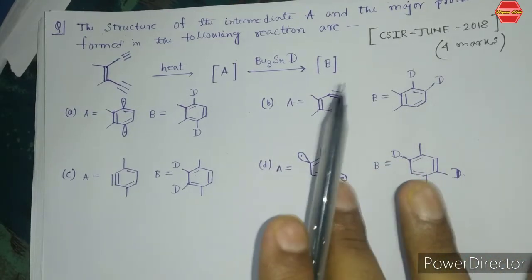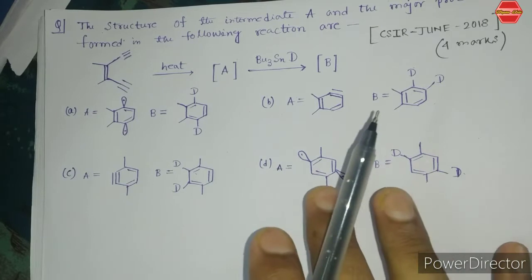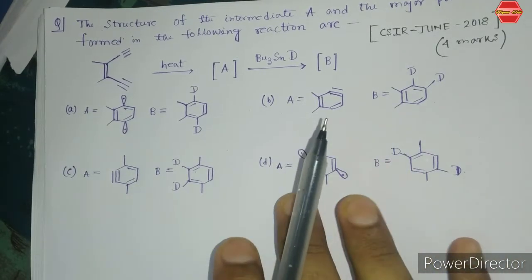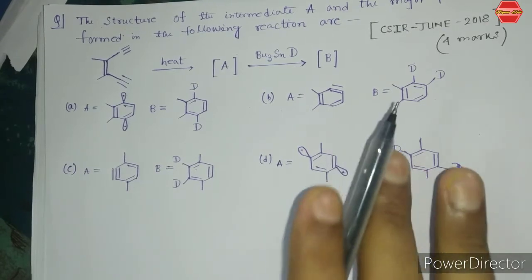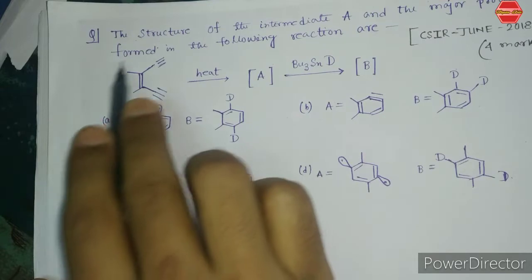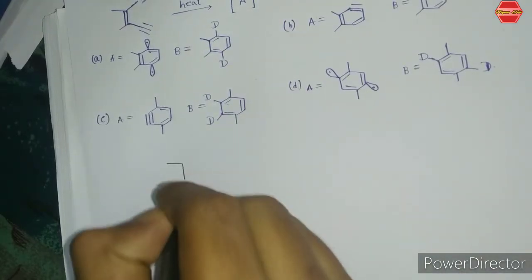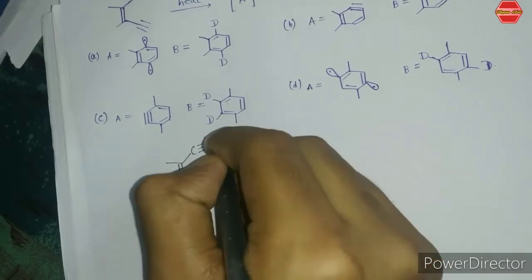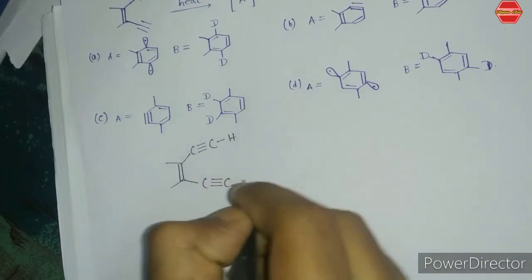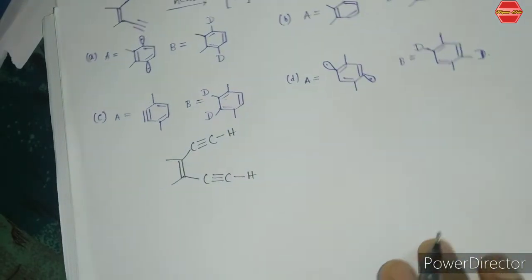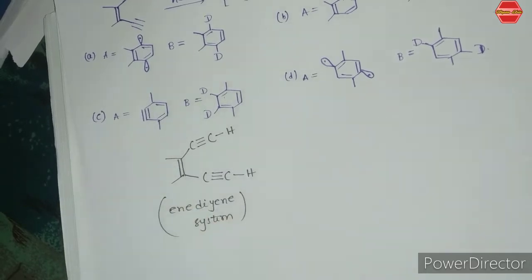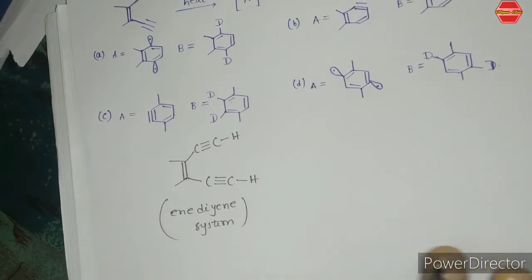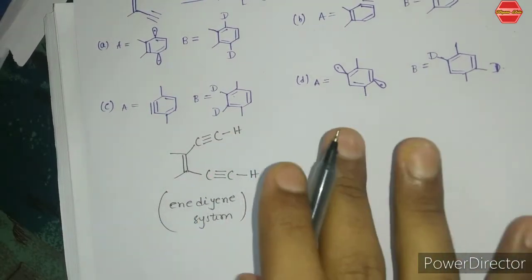The Bergman cycloaromatization is a very important and popular name reaction. The substrate used is the enediyne system. Let me explain what the enediyne system is — there is a structure given in the question that represents the enediyne system. This is your enediyne system, and this type of structure undergoes the aromatization process.